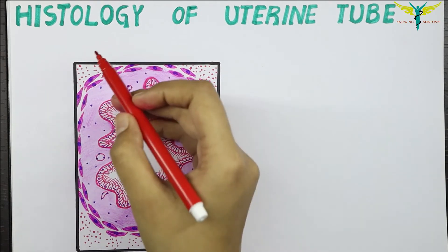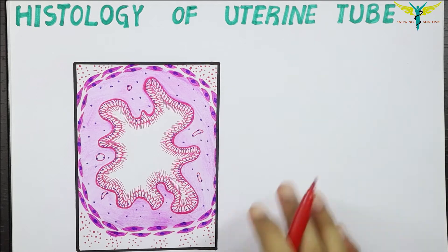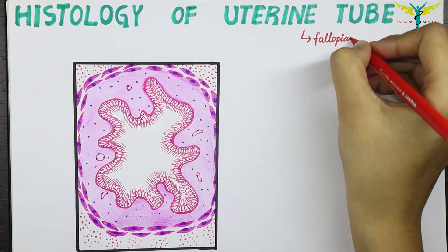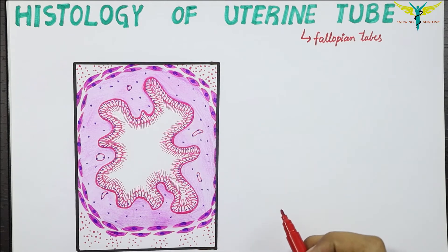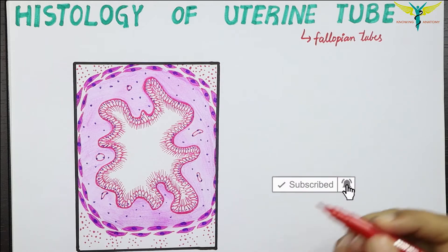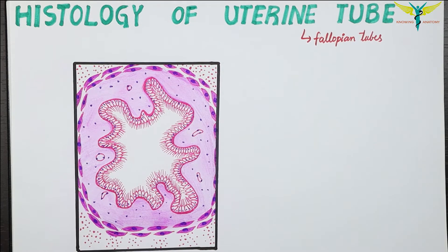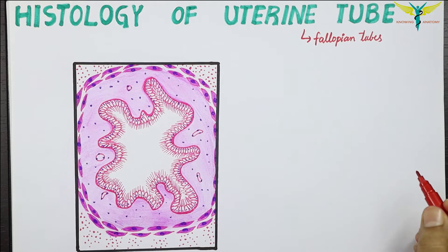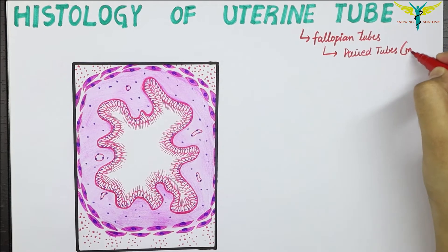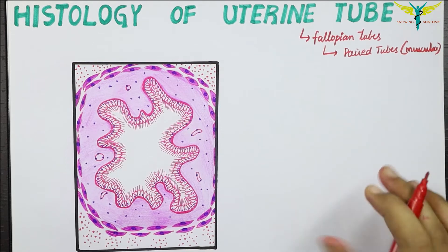In this video, let's learn about the histology of the uterine tube. The uterine tubes are also called fallopian tubes. These are paired muscular tubes in which each tube has two ends — one is the medial or uterine end, attached to the opening of the uterus, and another is the lateral end that opens into the peritoneal cavity near to the ovary.